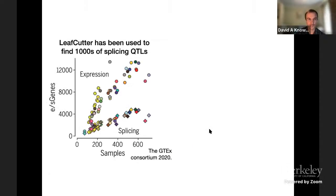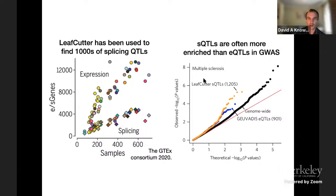We and others have used LeafCutter to detect thousands of what are called splicing QTLs, associations between common genetic variation and splicing outcomes. This is a figure from the most recent GTEx paper who used LeafCutter for their main splicing analysis. We and others have also shown that splicing QTLs are often just as enriched or even sometimes more enriched than eQTLs in GWAS. This for example is for multiple sclerosis. The big picture is you don't want to ignore sQTLs when you're looking at the effect of non-coding variation.